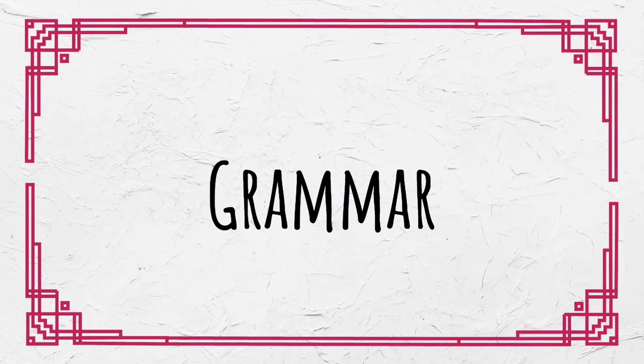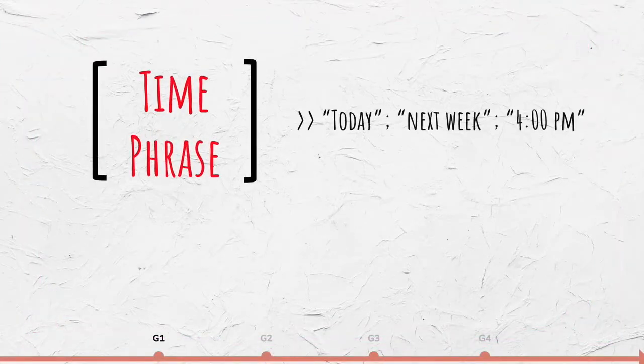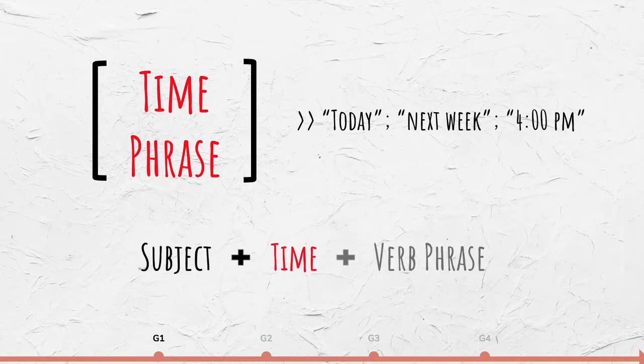Now let's move on to the grammar. In Chinese, a time phrase such as today, next week, or four o'clock p.m. is placed before the verb, not after. The structure is subject plus time plus verb phrase.